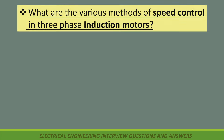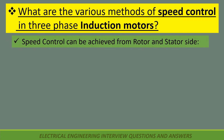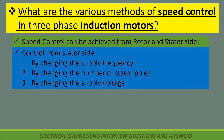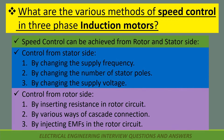What are the various methods of speed control in three phase induction motors? Speed control can be achieved from rotor and stator side. Control from stator side: first, by changing the supply frequency; second, by changing the number of stator poles; third, by changing the supply voltage.